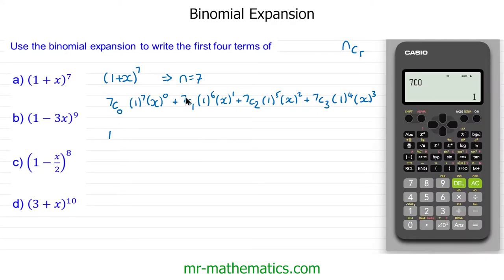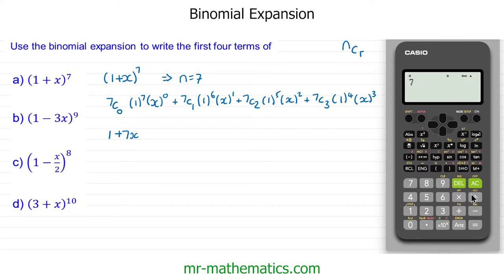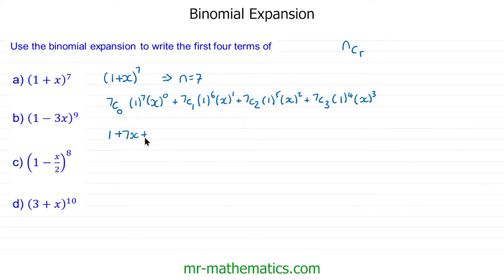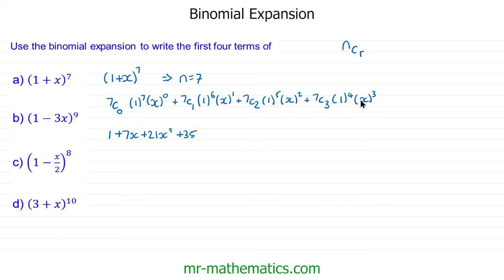For the next term, 7 choice 1 gives us 7. Then 1 to the power of 6 is 1 and x to the power of 1 is just x, giving 7x. For the next term, 7 choice 2 — pressing 7, shift, divide, 2 — gives 21, and 1 to the 5 is 1, so we get 21x². Our fourth term: 7 choice 3 is 35, giving 35x³. So these are the first four terms of our expansion for question a.